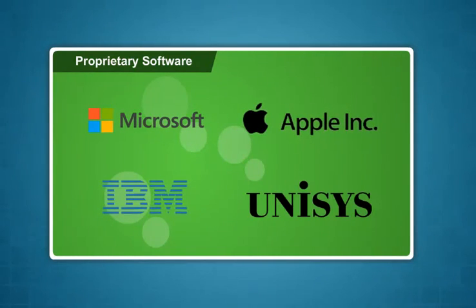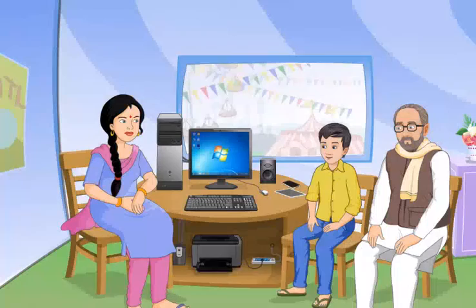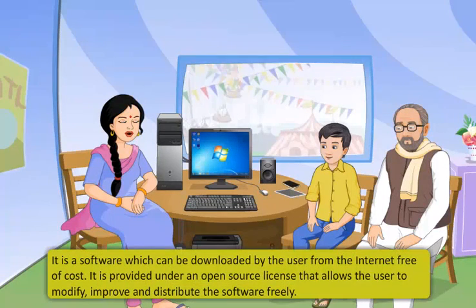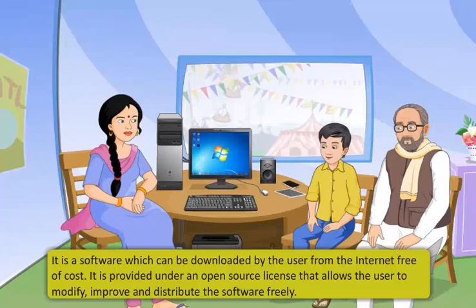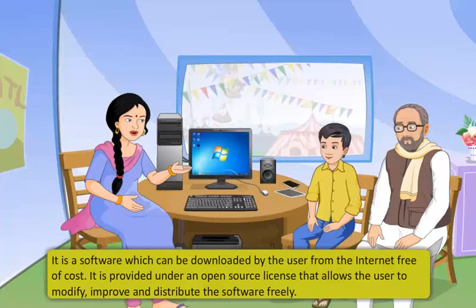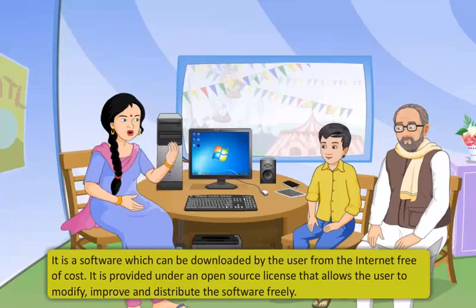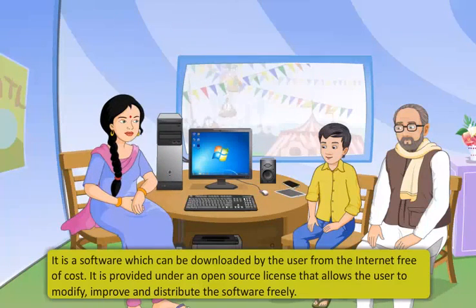The most common types of proprietary software are Microsoft, Apple, IBM operating systems, and Unisys. Free or open source software is software which can be downloaded by the user from the internet free of cost.